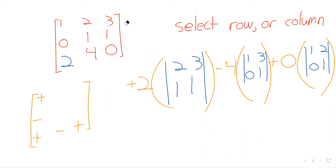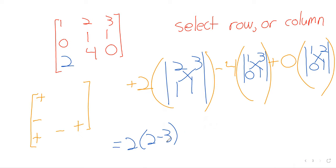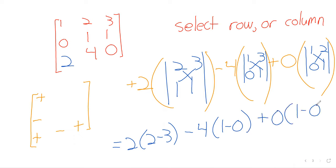Each of these 2×2 determinants can be found using the technique from before. We've defined the determinant of a 2×2 matrix. So: 2 minus 3 is negative 1, 1 minus 0 is 1, giving us 2 times negative 1 minus 4 times 1 plus 0, which is negative 2 minus 4, or negative 6.